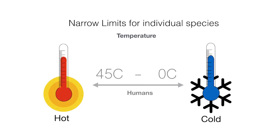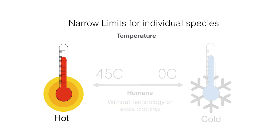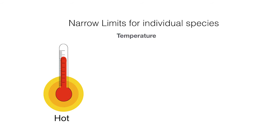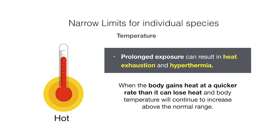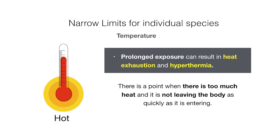Let's start off by having a look at the narrow limits for humans. On paper, we can live anywhere between 0 degrees Celsius to 45 degrees Celsius without the use of technology or extra clothing. Although homeostasis allows the body temperature to cool down in hot environments, prolonged exposure in the heat can result in heat exhaustion, which can lead to hyperthermia. This is when the body gains heat at a quicker rate than it can lose heat, and body temperature will continue to increase above the normal range.